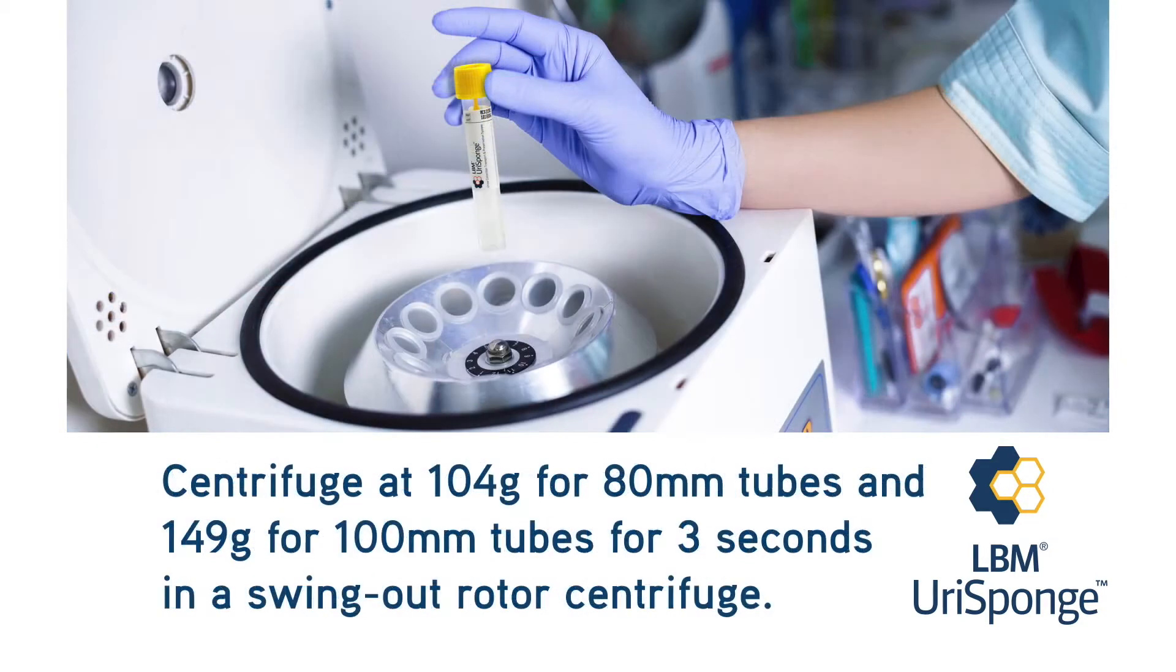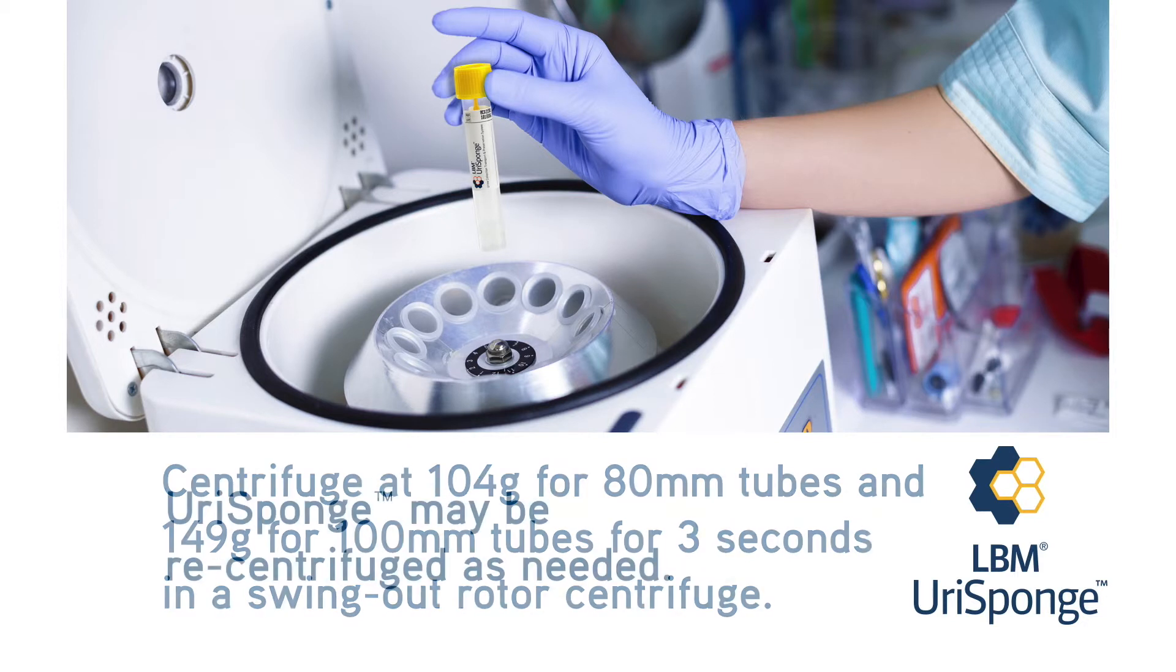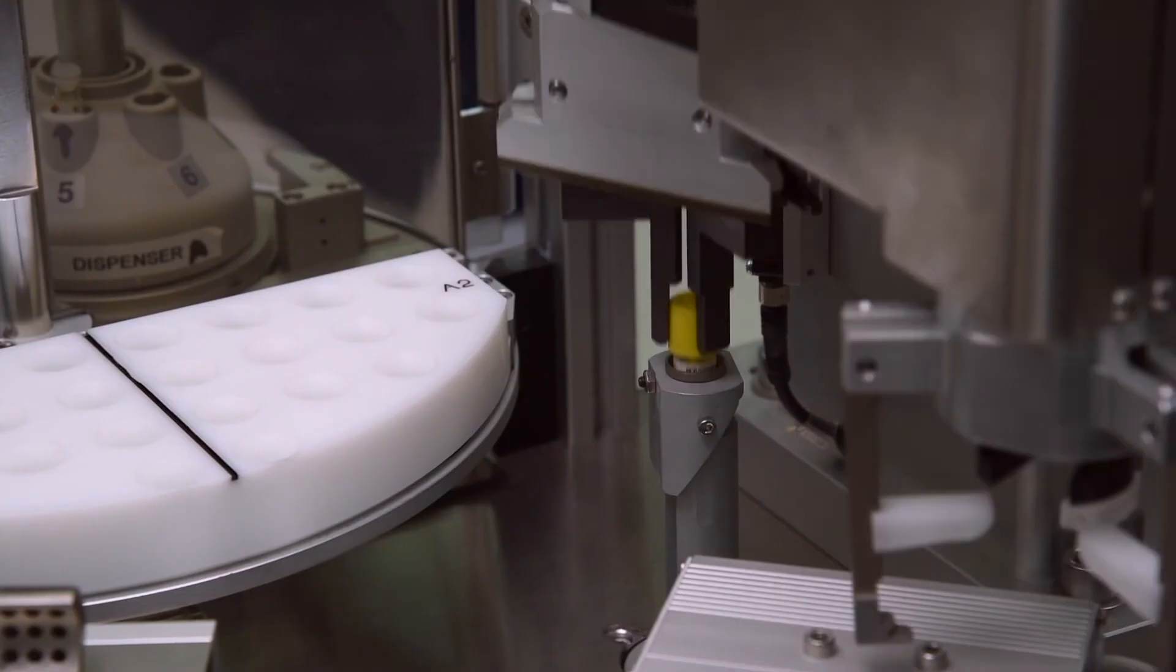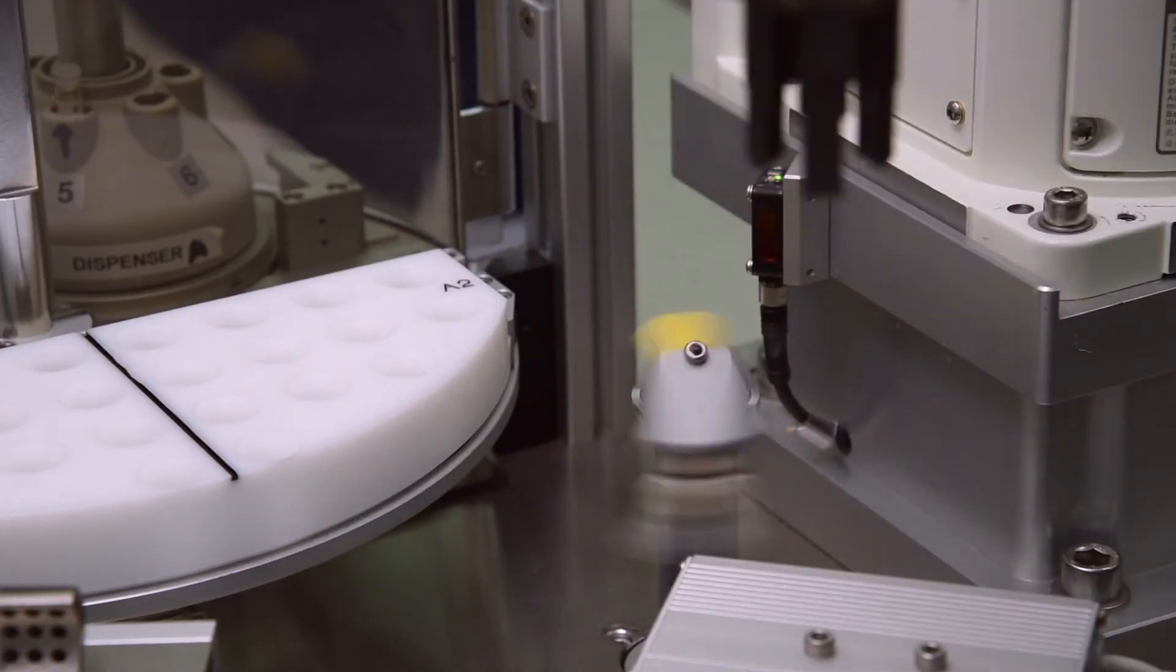Centrifuge at 104 grams for 80 millimeter tubes and 149 grams for 100 millimeter tubes. Uri sponge may be re-centrifuged as needed. When processed on the WASP automated specimen processor, the built-in spinner will automatically rotate the samples to release the urine.